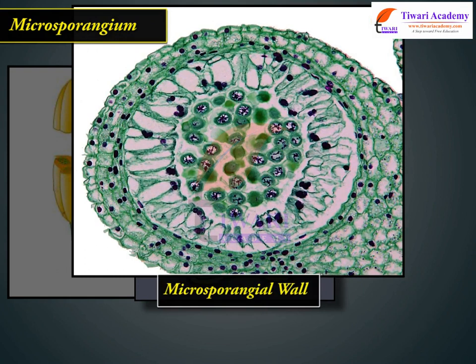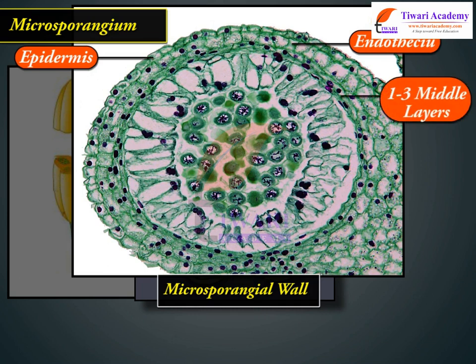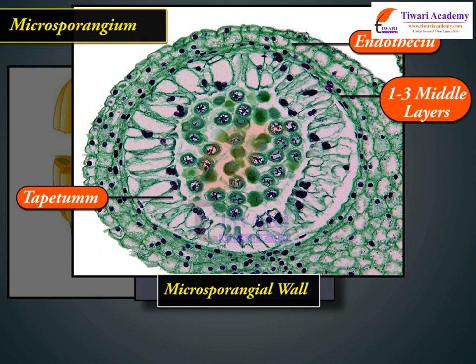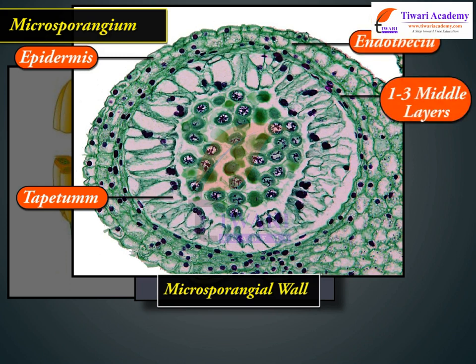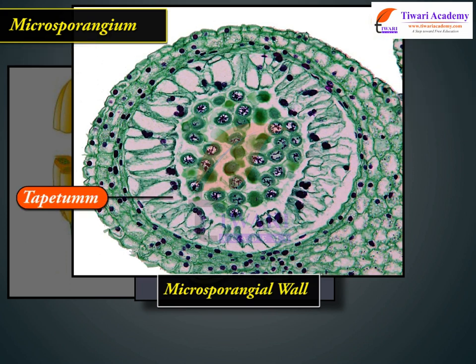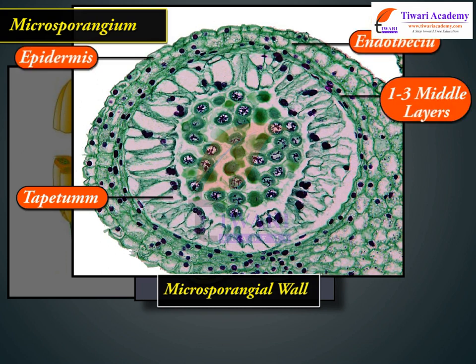The microsporangial wall has four types of layers: epidermis, endothecium, one to three middle layers, and tapetum. The outer three wall layers perform the function of protection and help in dehiscence of the anther to release the pollen. The innermost wall layer is the tapetum.